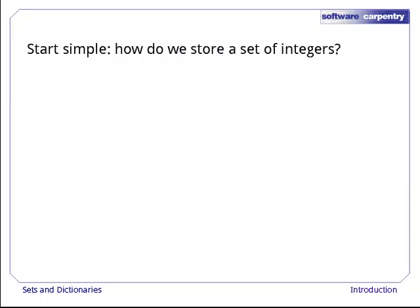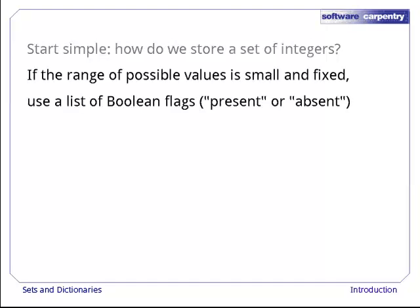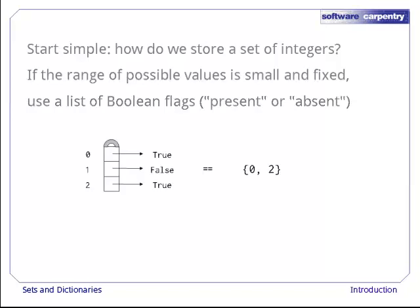Let's start with something simple, storing a set of integers. If the range of possible values in the set is small and fixed, we could just use a list of booleans. Here, true at index i means the integer i is in the set, and false means it isn't.